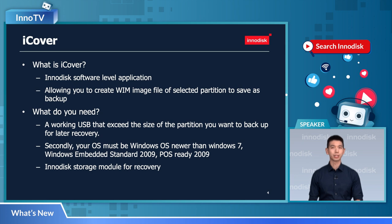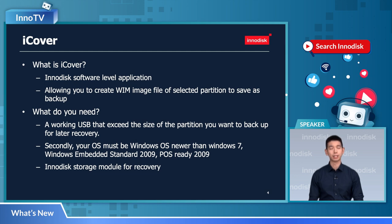So what do you need to use iCover? First, a workable USB drive that exceeds the capacity of the selected partitions for later recovery usage. Secondly, your OS must be Windows-based and newer than Windows 7, Windows Embedded Standard 2009, and POSReady 2009. We also have a Linux version of iCover available. Thirdly, InnoDisk storage for later OS recovery.